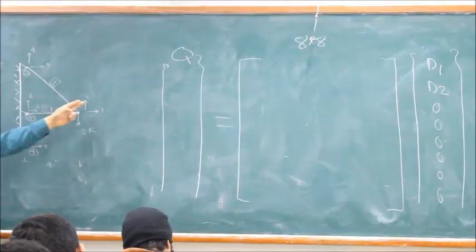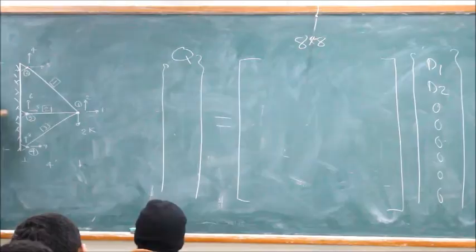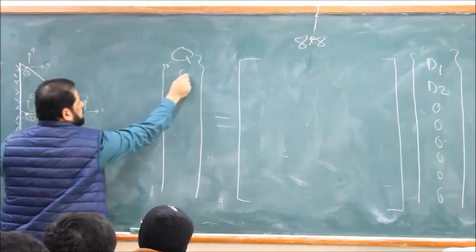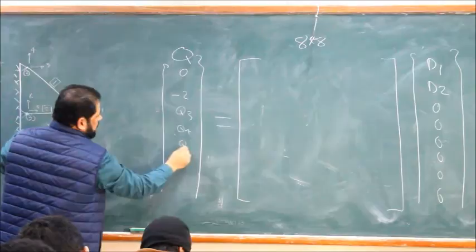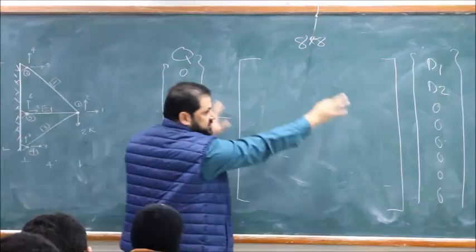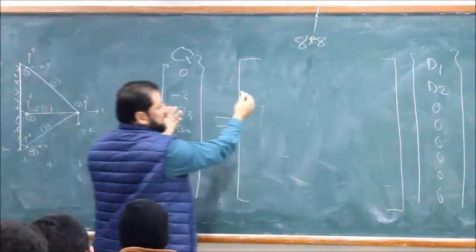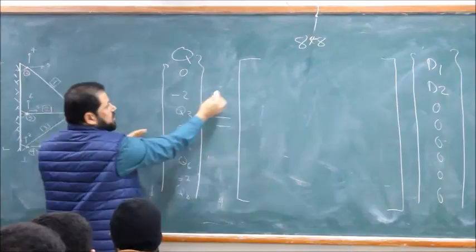Whenever you have zero displacement, it means there is a reaction there. So we have this matrix: Q1 equals 0, Q2 equals minus 2, then Q3 through Q8 are the reactions. We fill this matrix — similar to what we had in the previous vector. Now what we need to do is calculate D1 and D2: two equations, two unknowns.